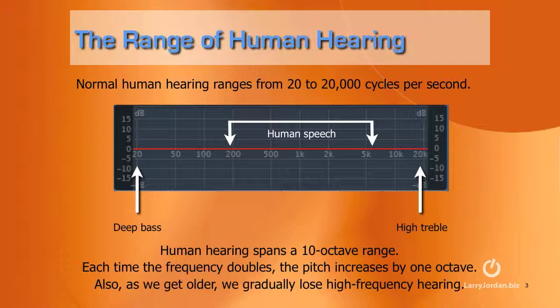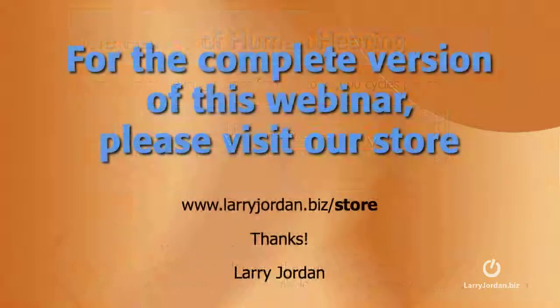With a range of 20 cycles at the low end and 20,000 cycles at the high end, human hearing spans a 10-octave range. Each time the frequency doubles, the pitch increases by one octave. So 20 to 40 cycles at the low end is a change in pitch of one octave — eight whole steps on a piano, or 12 half steps. Interestingly, from 10,000 cycles per second to 20,000 is also a one-octave change in pitch — a vast difference in cycles, but a very similar difference musically.